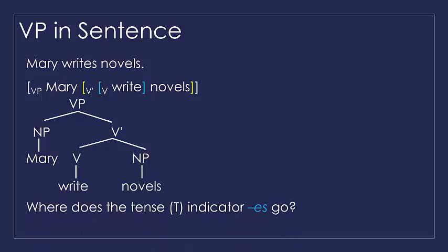Now if we look at the sentence 'Mary writes novels,' we have the element '-s' here. The question is: where does the tense indicator '-s' go? Because in the VP structure, we only have 'Mary write novels' — 'write' as the head, 'Mary' as the specifier, and 'novels' as the complement. As we know, we can paraphrase this as 'Mary's writing of novels.' So '-s' does not belong inside the VP.